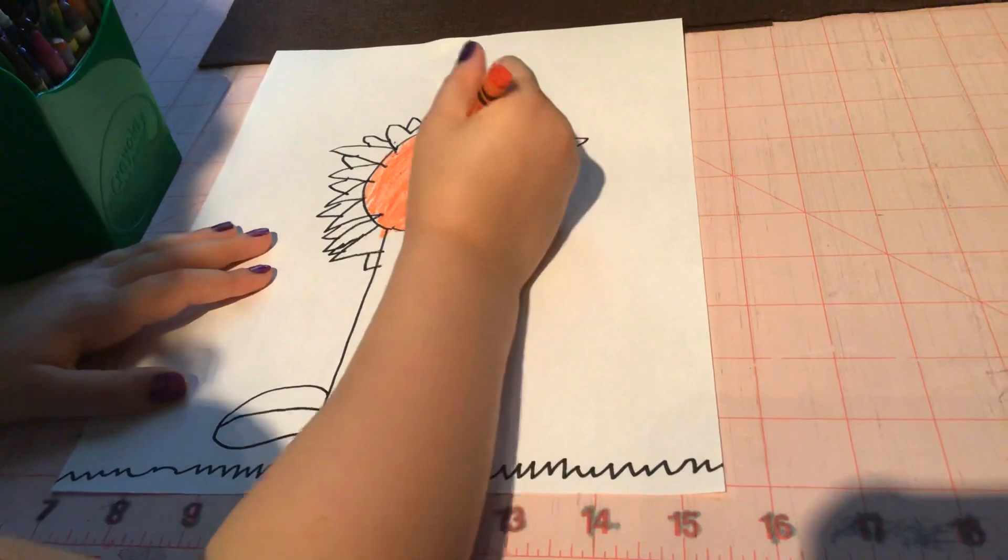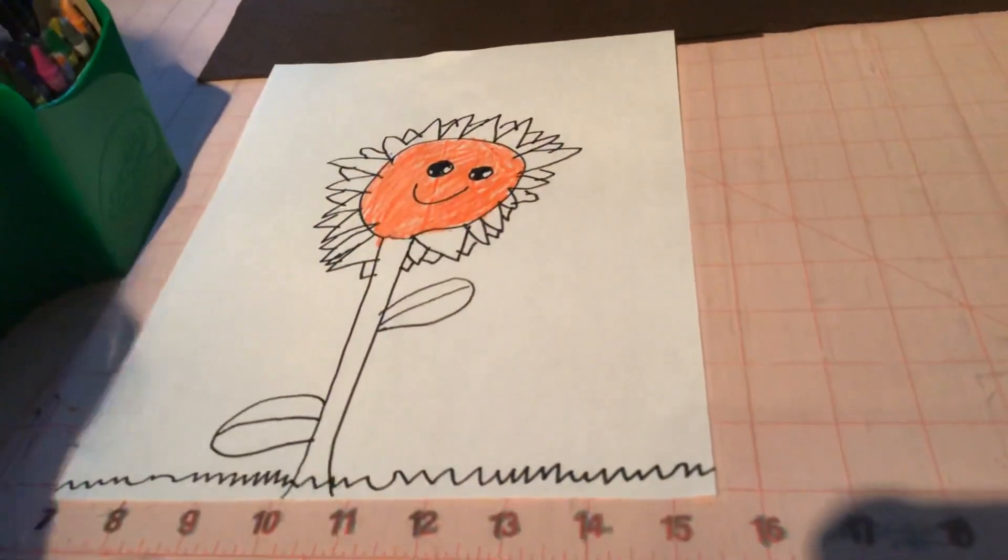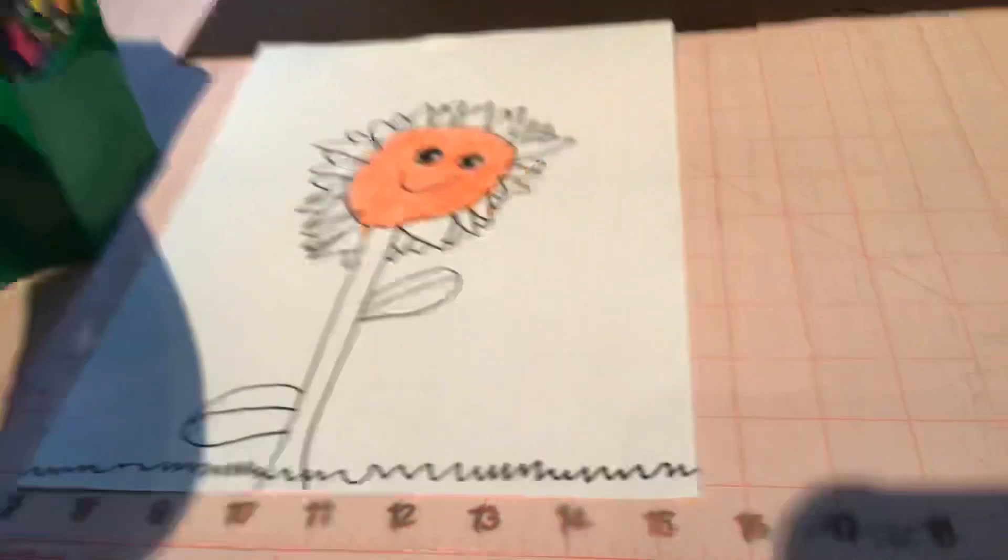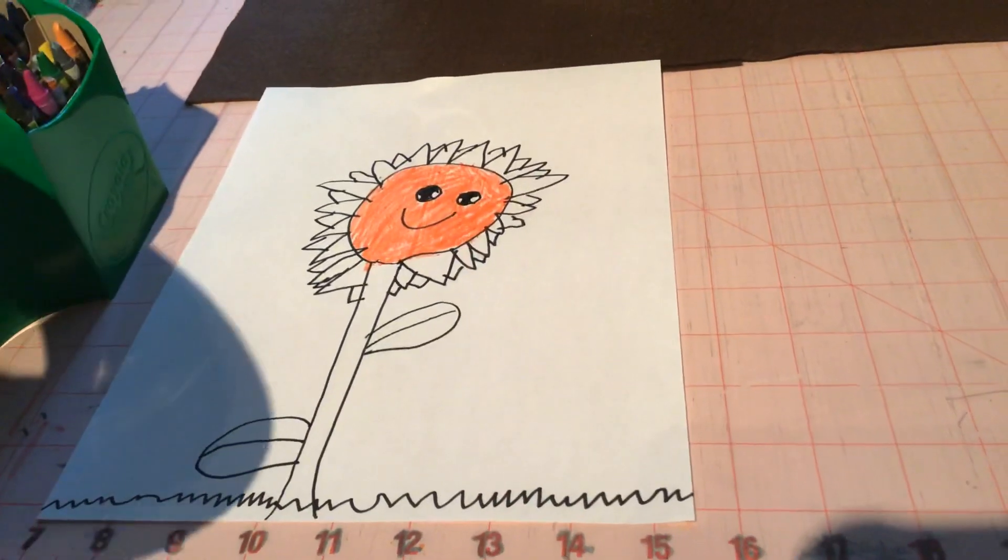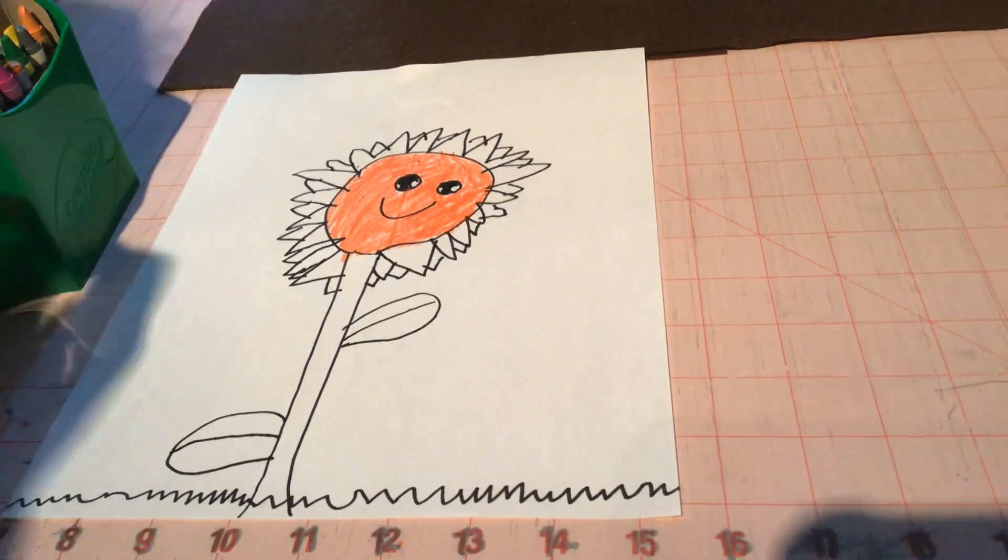We're done with the middle. And now we want to color in around it. So we are going to use yellow.